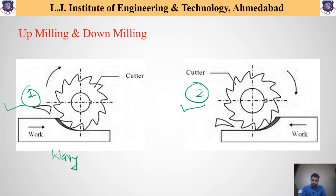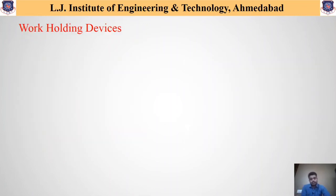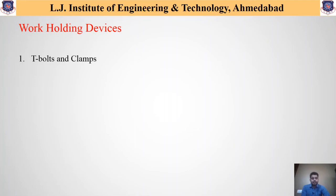We have completed our discussion on up milling and down milling, and we come across that during machining operations different work holding devices are also required. There are many work holding devices available based on the different shapes of parts. The first work holding device is the T-bolt and clamps, which are majorly used at the bed section of machinery to restrict the axial movement of the workpiece. These T-bolts and clamps are mostly used for rectangular, flat, or horizontal workpieces which need to be fixed during machining operation on the bed section of the machine.